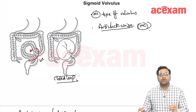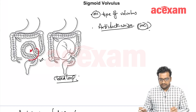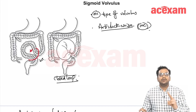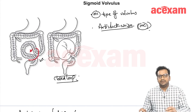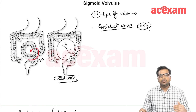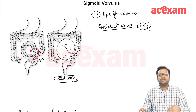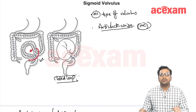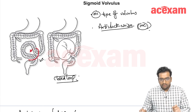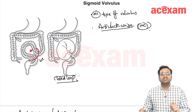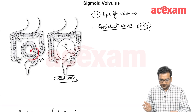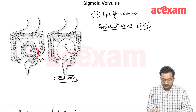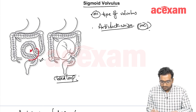The next topic is sigmoid volvulus. There are two types of volvulus in the large intestine: cecal volvulus and sigmoid volvulus. Out of these two, sigmoid volvulus is more common.